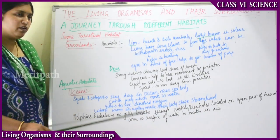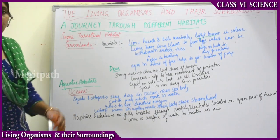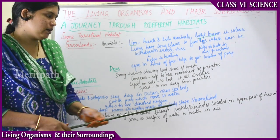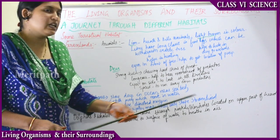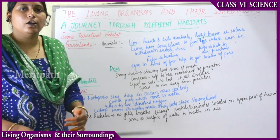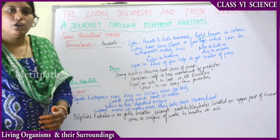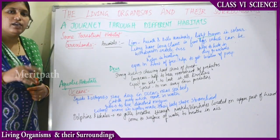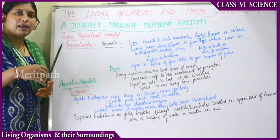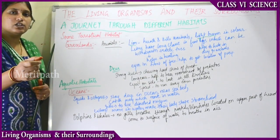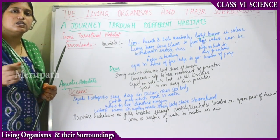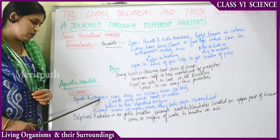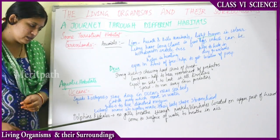Squids and octopus breathe through gills, which use the dissolved oxygen from the water. When they move in water, they modify their body shape to become streamlined, like that of a fish. Usually their body is not streamlined, but when moving, they make it streamlined. These are the adaptations of squids and octopus.